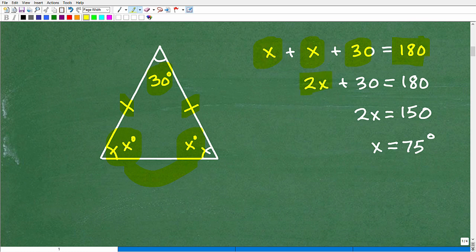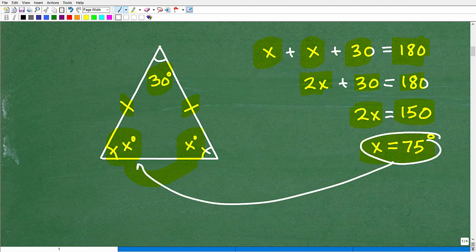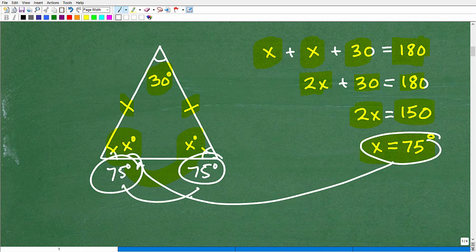X plus X is 2X plus 30 is equal to 180. I subtract 30 from both sides of the equation. That gives me 2X is equal to 150. Now I'm going to divide both sides of the equation by 2. And I get X is equal to 75. And that is the angle. So this is 75 here. Okay, that's 75 degrees to be specific about it. And this is also 75 degrees right there. So 75 and 75, that's 150. I throw 30 on top of the 150, I get 180 degrees.